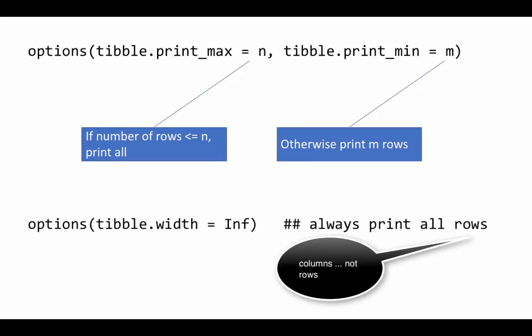If you always want to see all the columns rather than just the columns that fit into the column width, you can say options tibble.width equals inf. In this case, it will always print all the columns.